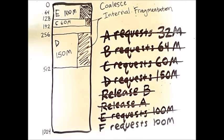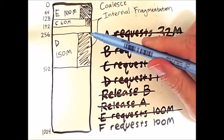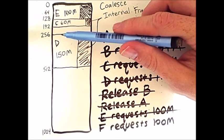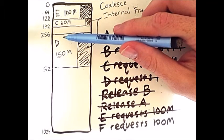Now comes our final request, process F, which also wants 100 megabytes. We start at the middle and go up, and we have regions of 256 megabytes. However, when we go up again, we see that the two 128 megabyte portions are both occupied, at least partially.